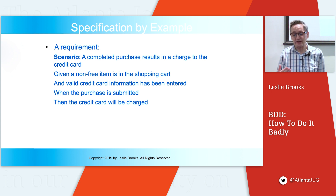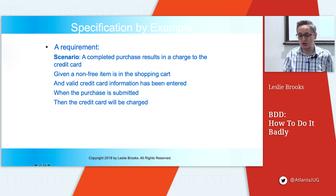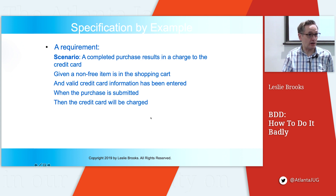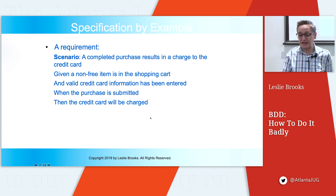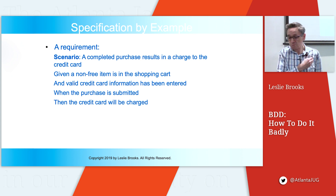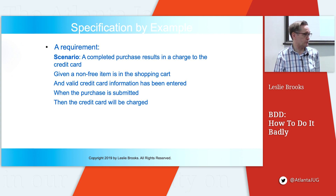We can use the same requirements and reuse a ton of source code when we switch between testing the UI and testing the API. Classical QA people think that if you're automating the UI and then go automate the API, it's a totally new effort — 100% new code. Not if you do it right.